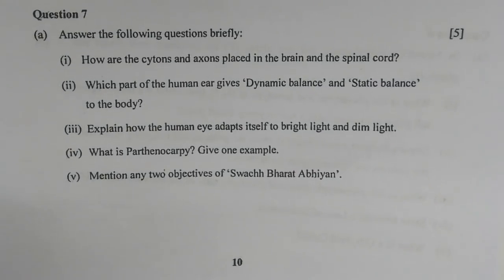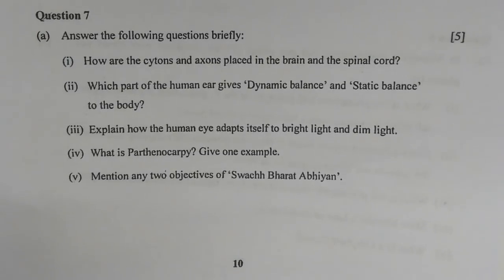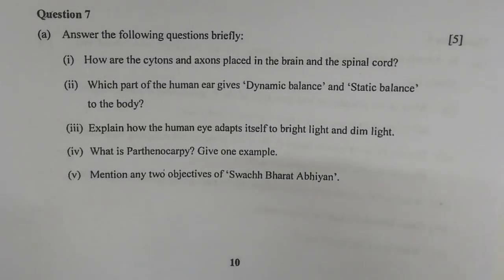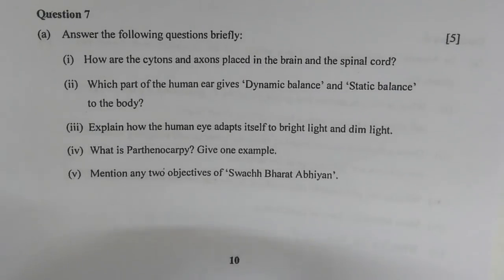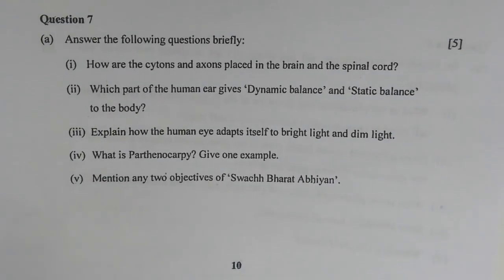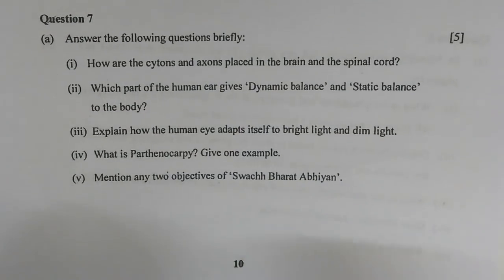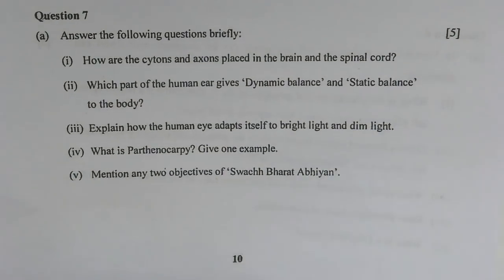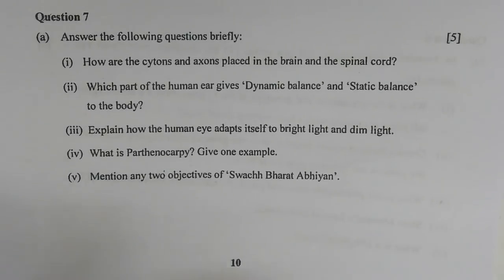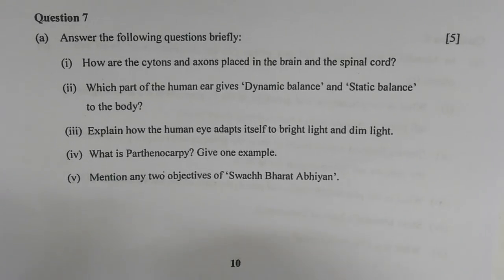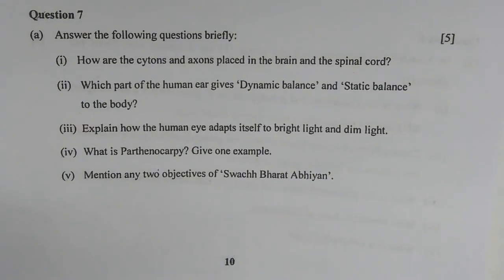Number three — explain how the human eye adapts itself to bright and dim light. The pupil constricts in bright light to reduce the amount of light entering the eyes, while the pupil dilates in dim light, allowing maximum light to enter. These are the adaptations the human eye uses in bright and dim light conditions.